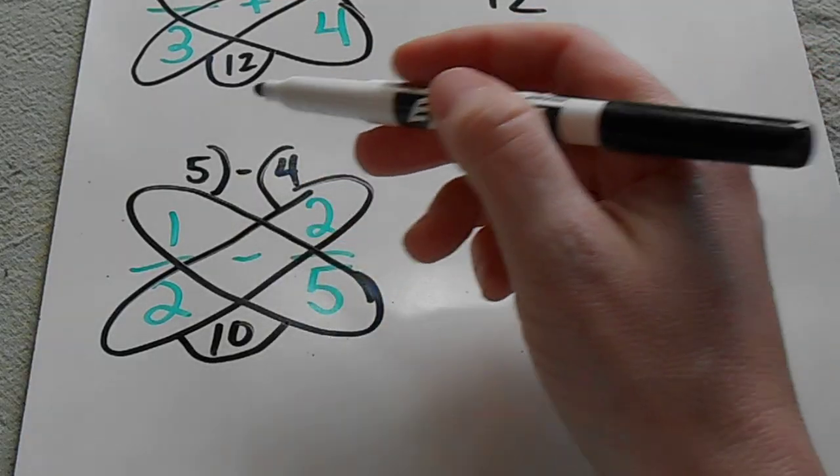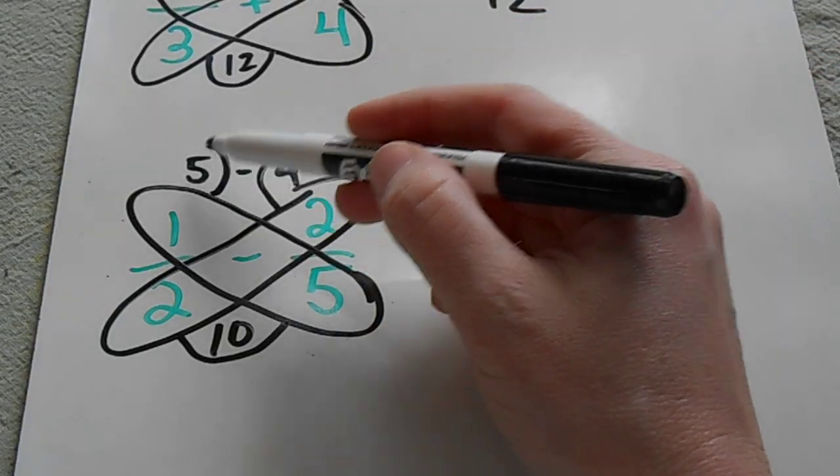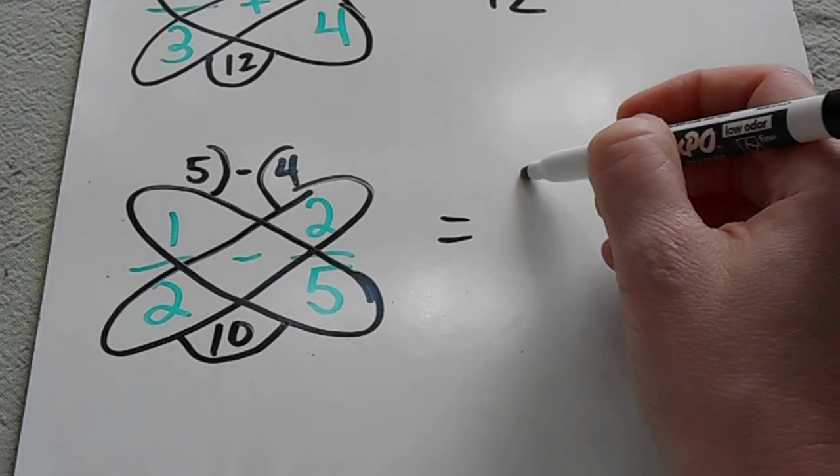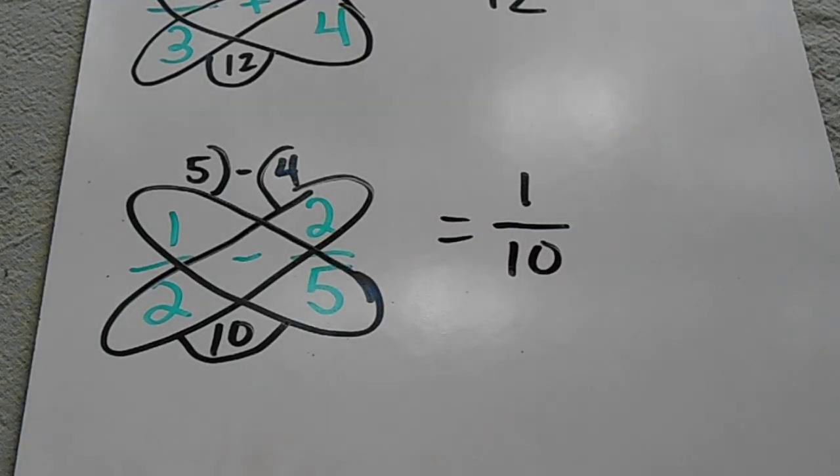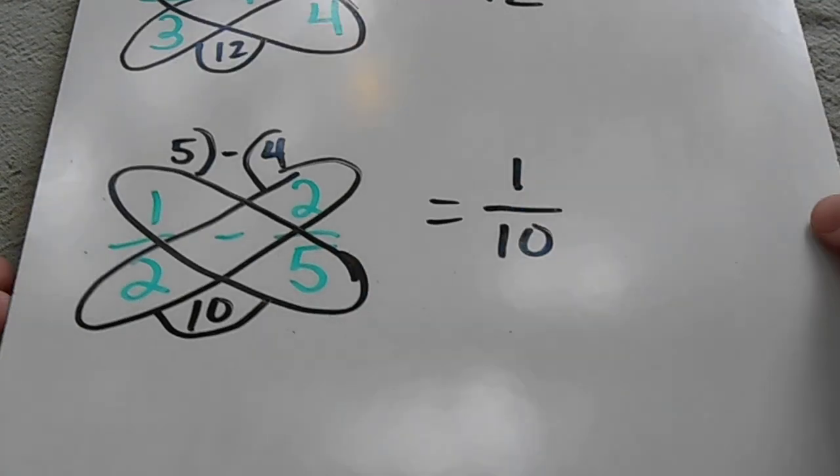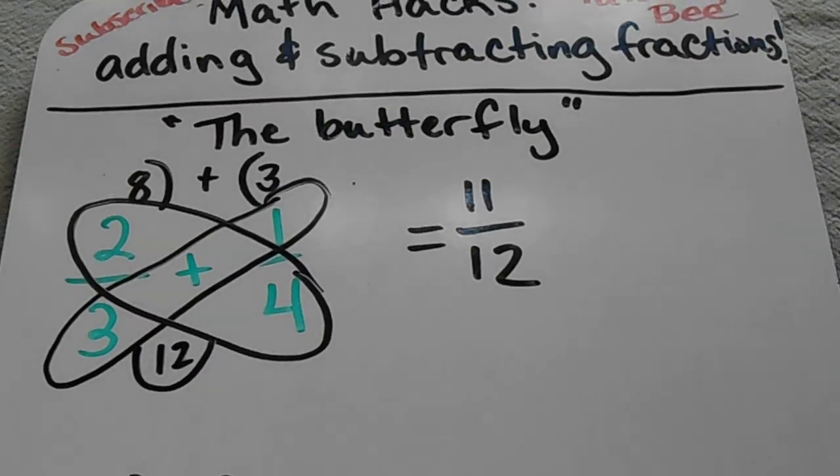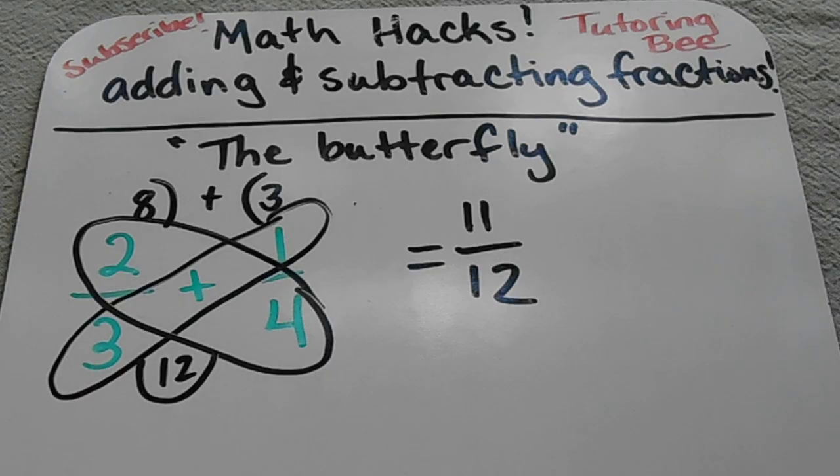And then, since this is a subtraction problem, I'm going to ask myself five minus four is one. And then my new denominator, which is ten. So, pretty cool, pretty simple way to add and subtract fractions with different denominators. I hope you like this video. Please subscribe to my channel and let me know what you think. Thanks!